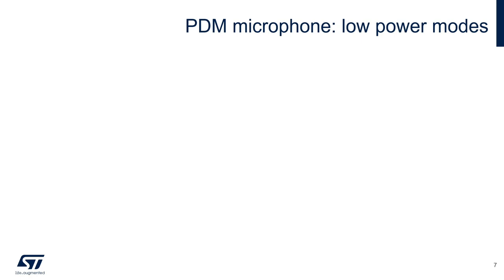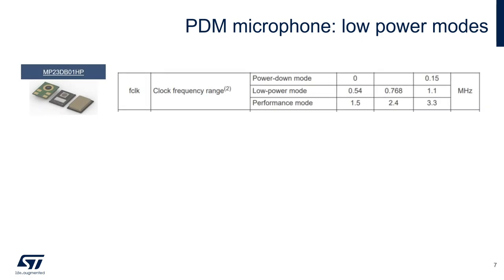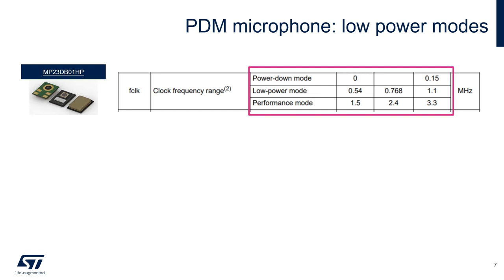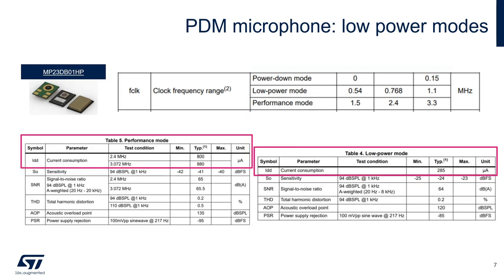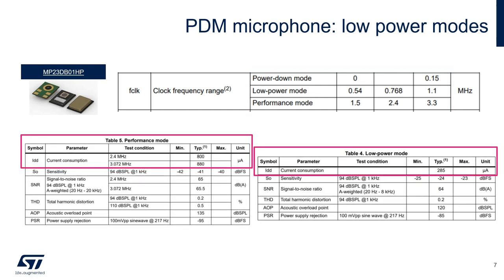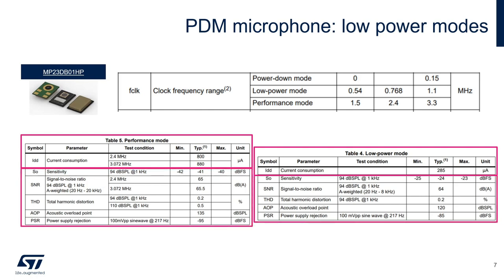Modern PDM microphones can provide several modes of operation to find the right trade-off between power consumption and acoustic performances. Here is an extract of the data sheet of the MP23DP01HP multi-mode microphone, which highlights the concept of multi-mode. Depending on the clock provided, the microphone works in a low-power mode or in a performance mode. Generally speaking, the lower the clock frequency provided, the lower the power consumption.